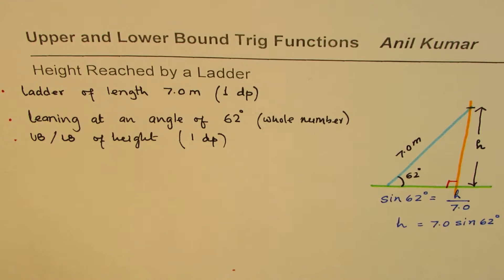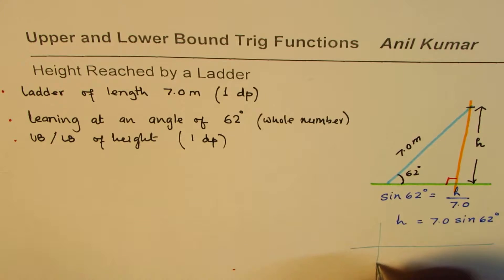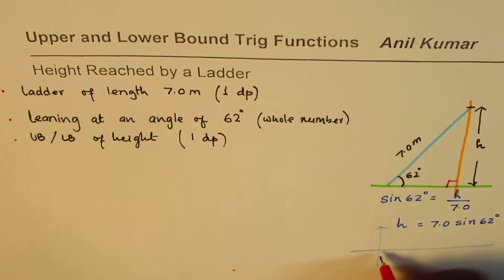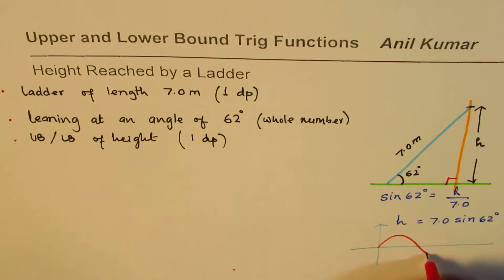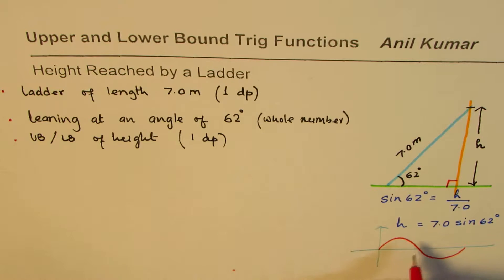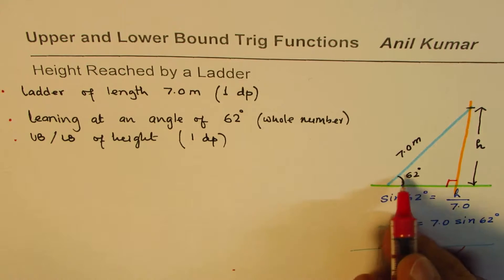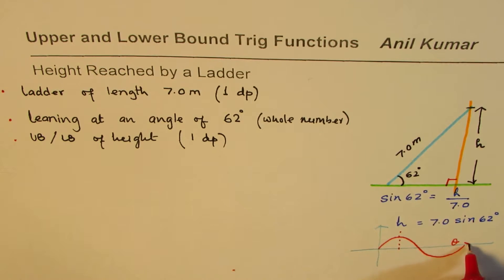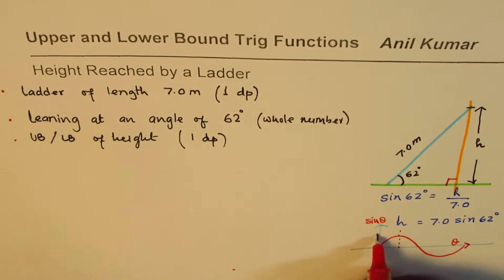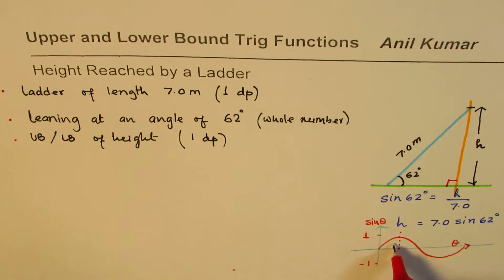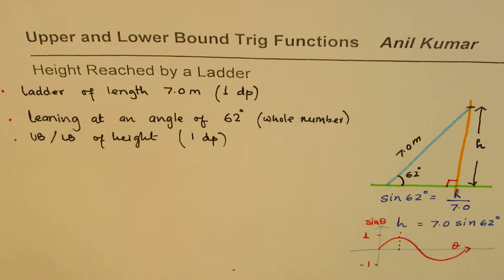The sine function increases as the angle increases. Looking at a sketch of the sine wave, for angles from 0 to 90 degrees, sine theta ranges from 0 to a maximum of 1. So as the angle increases, the value of sine theta increases — this is an important concept.